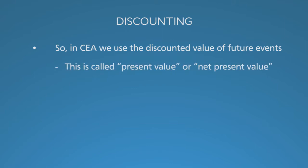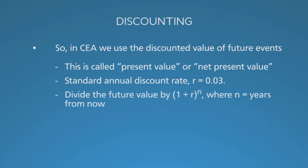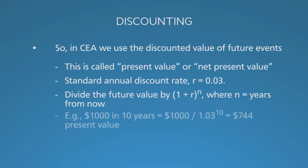We call this present value. We calculate it using a standard annual discount rate, typically 3%. The math is simple: the future value divided by 1 plus the discount rate to the power n, which is the number of years into the future. Thus, $1,000 in 10 years equals $744 in present value. That's all there is to discounting, except for a few practical details.